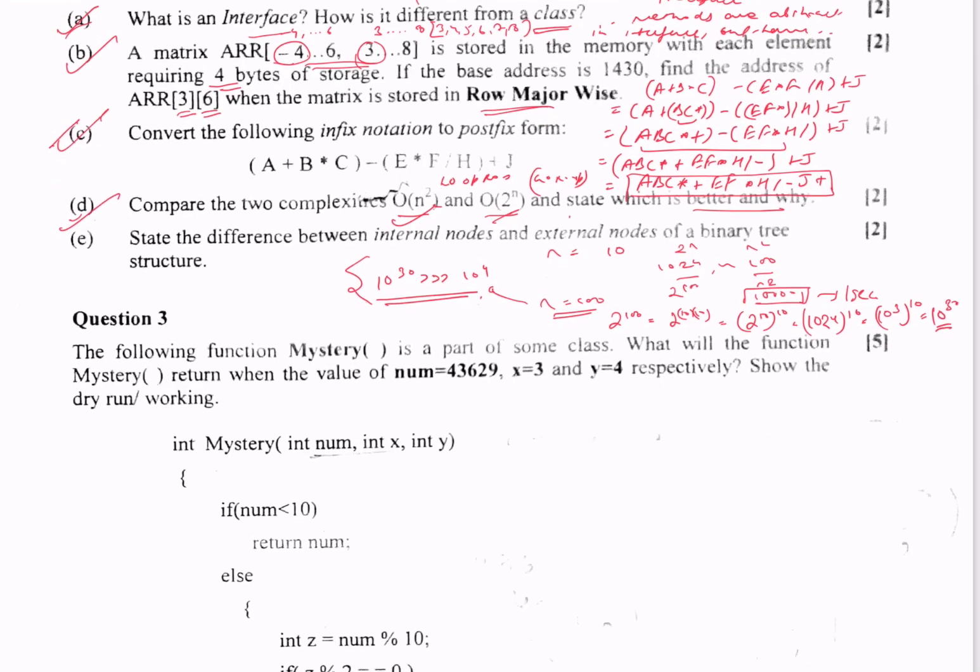Then we move on to the next part: state the difference between internal nodes and external nodes of a binary tree. Internal nodes are nodes which are not leaf nodes, and external nodes are nodes which are leaf nodes.